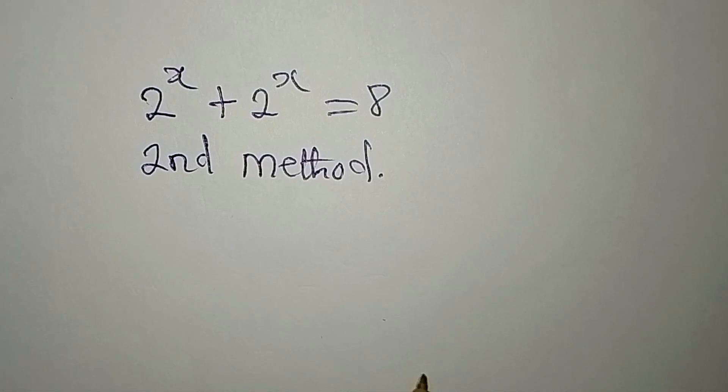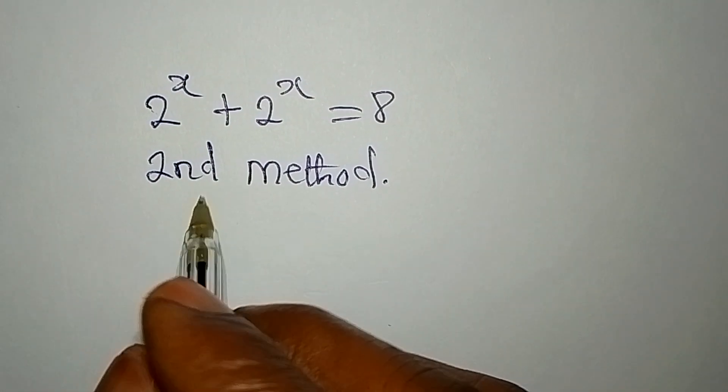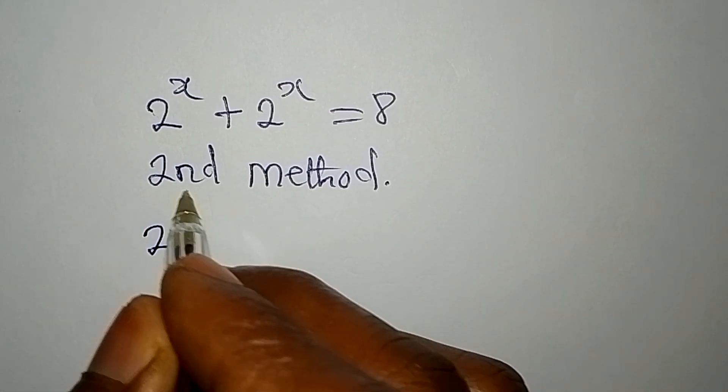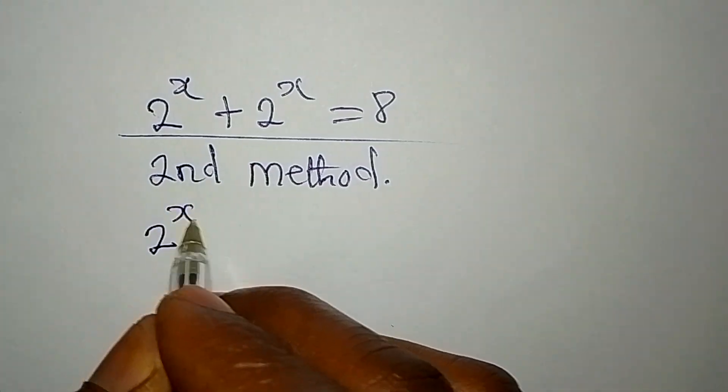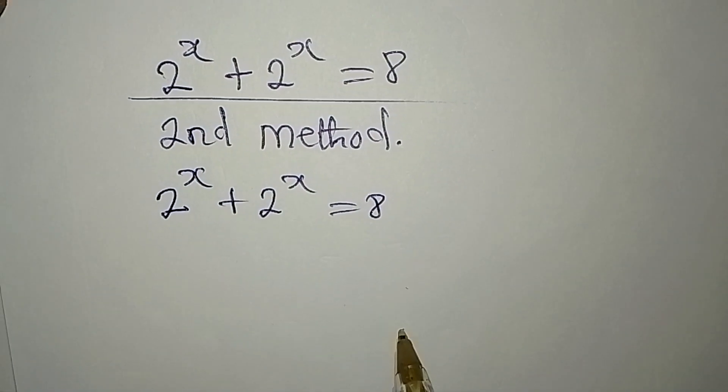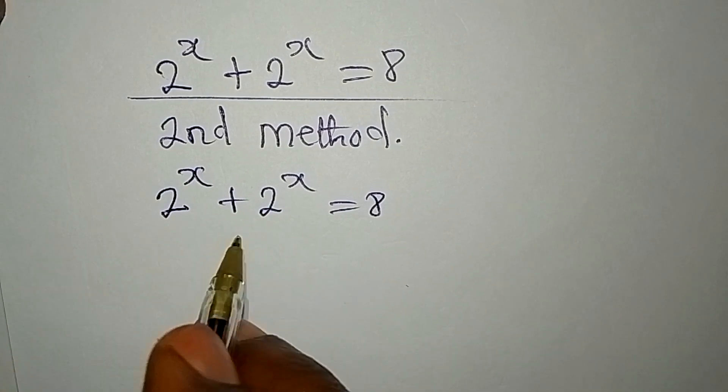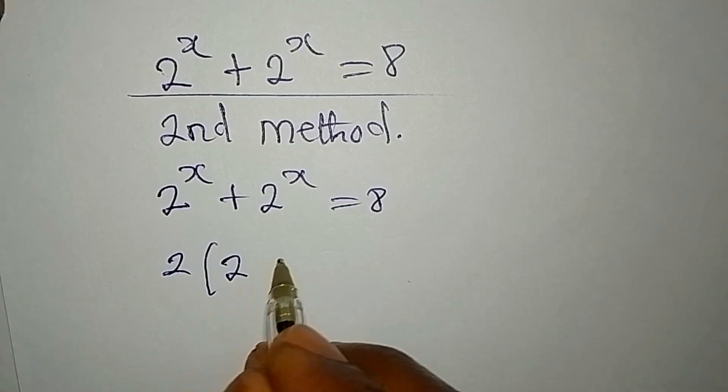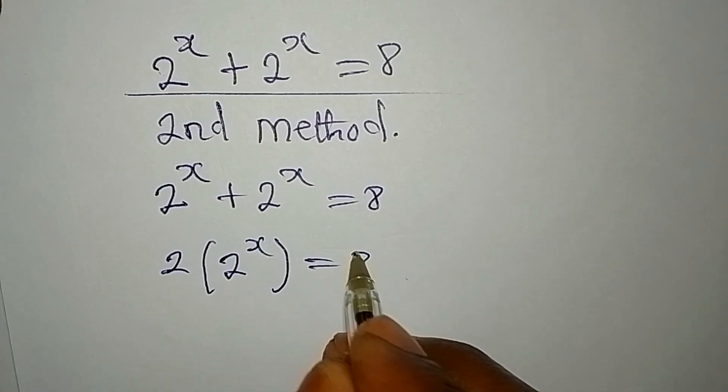The second method: we have 2 to the power of x plus 2 to the power of x equals 8. Like I told you, we are adding this, so we have 2 times 2 to the power of x and this is equal to 8.